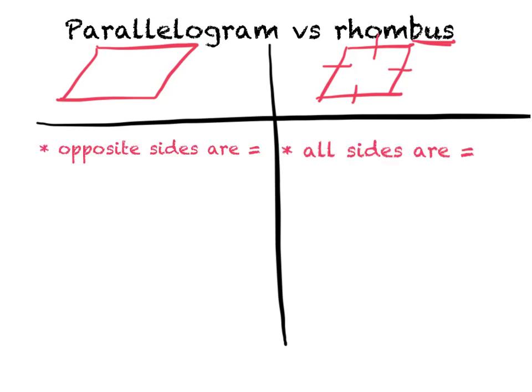So our first fact, the difference between the two. Opposite sides are equal in that parallelogram. So those two sides are congruent, and those two sides are congruent. And in the rhombus, all sides are equal.